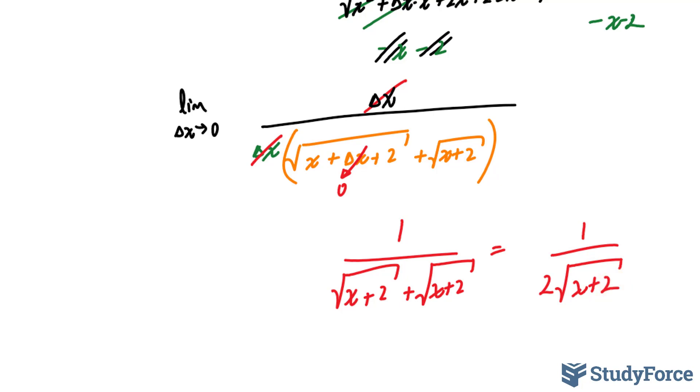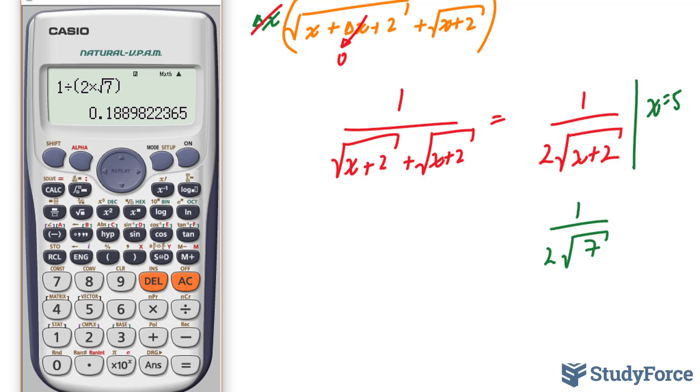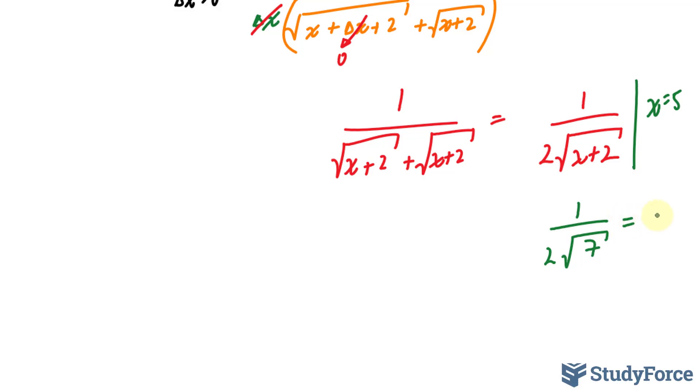We also need to find out the slope. So I'll evaluate this at x equals 5 because that's what the question asked for. We have 1 over 2 times 5 plus 2 is 7, so the square root of 7. If we find the decimal version of this number, you should end up with 0.1889.